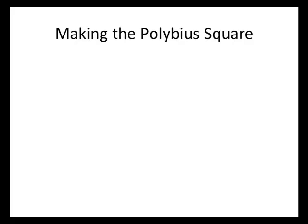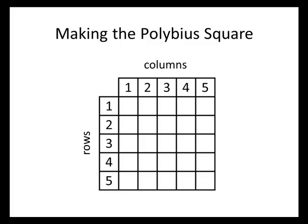The first step is going to be to make what's called the Polybius square. A Polybius square is a 5 by 5 grid. It has 5 rows, and the rows run horizontally, numbered 1 through 5, and 5 columns, and the columns run vertically, also numbered 1 through 5.